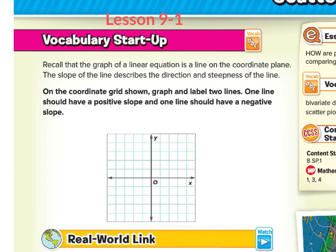Vocabulary startup. Recall that the graph of a linear equation is a line on the coordinate plane. The slope of the line describes the direction and steepness of the line. Remember, when we look at a linear equation, we are looking at a line on the coordinate plane. When they say linear, they mean line.